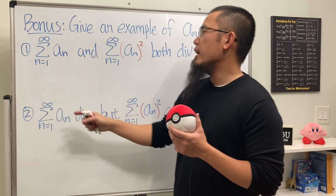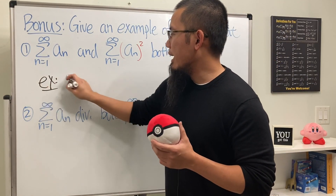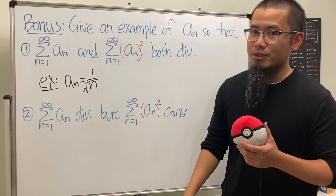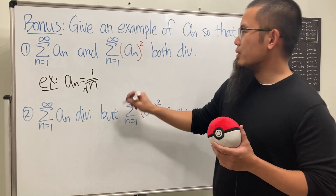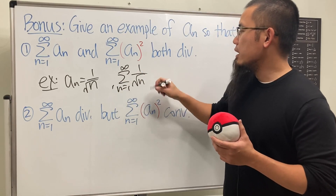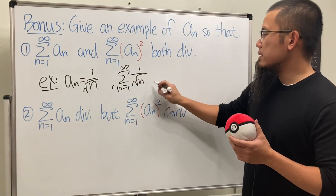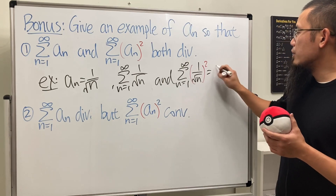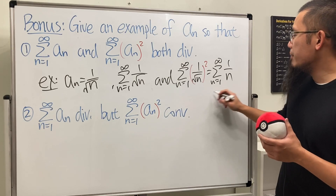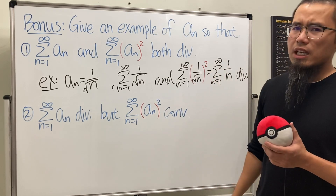For the first bonus, we want an example where both the series of aₙ and the series of aₙ² both diverge. We can take aₙ to be one over the square root of n, because the series from n equals one to infinity of one over the square root of n diverges — p is one-half, which is less than or equal to one. And when you square it, you get the series of one over n, which also diverges since p equals one.